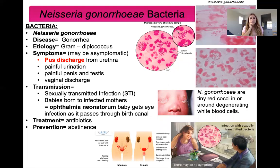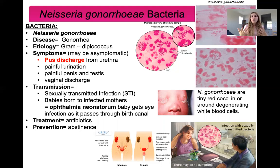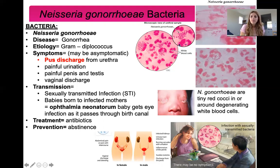Neisseria gonorrhoeae is the bacterium that causes gonorrhea. Note that bacterium means one, bacteria means many. Under the microscope, these bacteria are gram-negative — they stain red — and they are diplococcus-shaped, meaning circles in pairs. If someone presents with symptoms such as pus discharge, painful urination, painful testes, or vaginal discharge, you may suspect gonorrhea, send a sample to the lab, and a gram stain would show gram-negative diplococcus cells. Here is a picture from a urethral sample showing tiny red circles inside degenerating white blood cells.